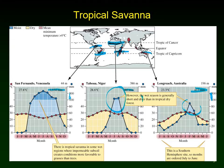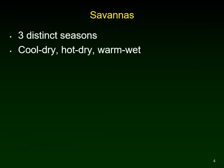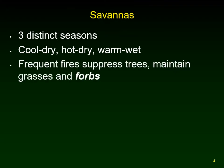Because of the changing seasons, animals in both the tropical dry forest and the tropical savannah will often migrate out of those areas during the dry season. The savannah has a cooler dry period, a hotter dry period, and then a warm wet period. Frequent fires suppress the trees and maintain a large population of grasses and forbs.